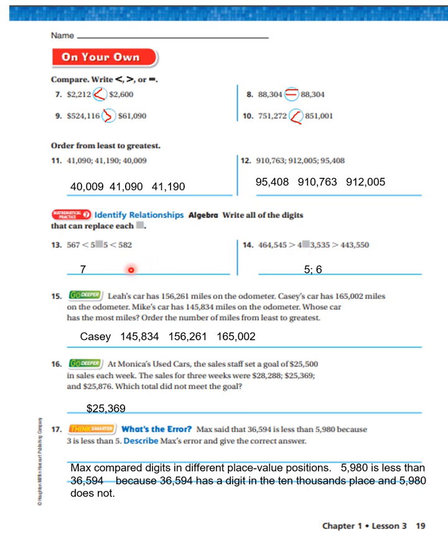It says Leah's car has 156,261 miles on the odometer. Casey's car has 165,002. Mike's car has 145,843. Whose car has the most miles? Order the numbers from least to greatest. Well, Casey has the most miles. Ordering the numbers from least to greatest would be 145,834, 156,261, and 165,002. Look at the next one.